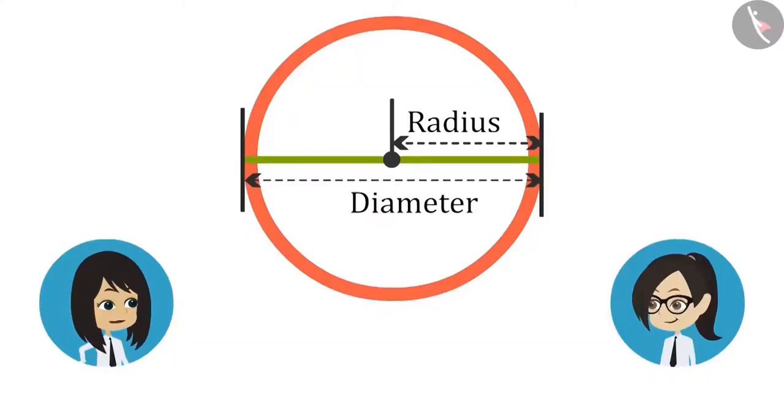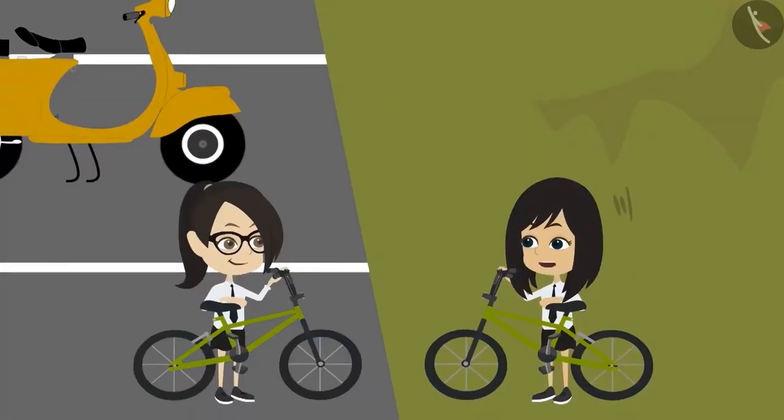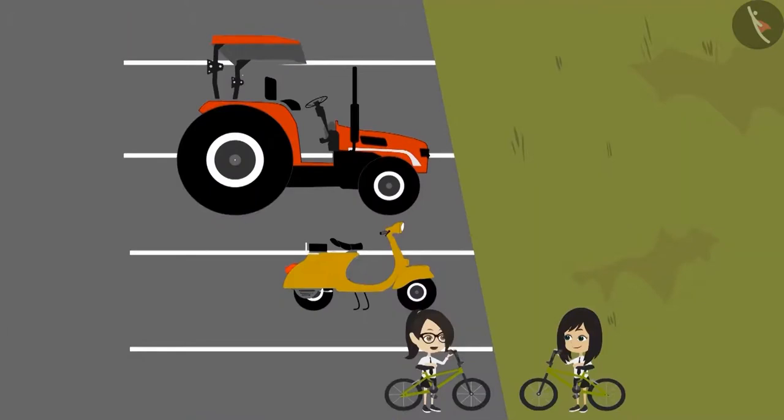Remember, sir told that the radius is diameter divided by 2. It means diameter is equal to 2 times the radius. Let's measure something. Let's measure these 4 tires. Then we will tell sir.